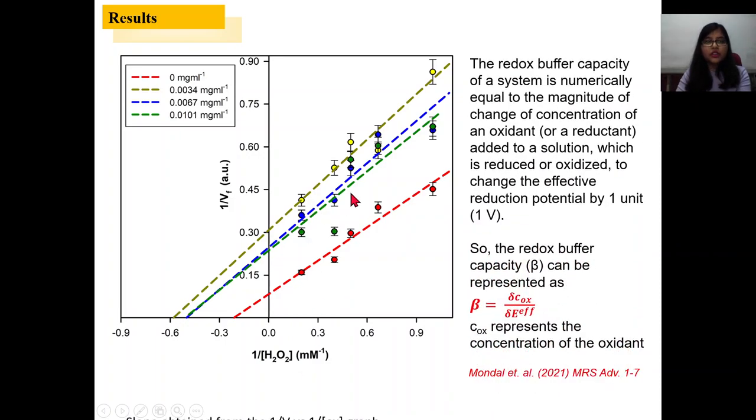And the slope of this graph dictates the redox buffering capacity, because redox buffering capacity is numerically equal to the magnitude of change of concentration of oxidant or reductant added to the solution to change the effective potential by one unit.